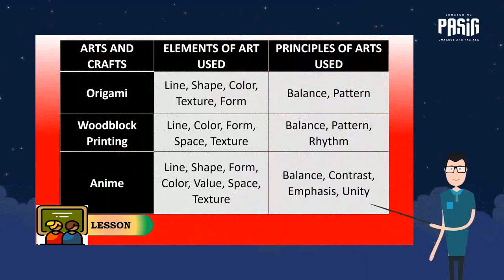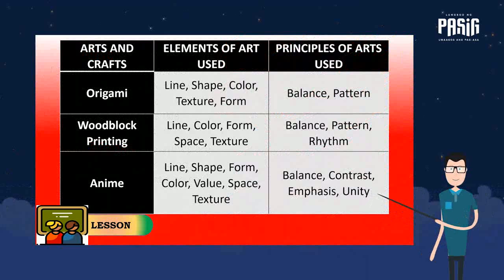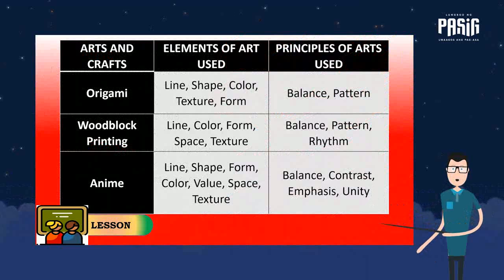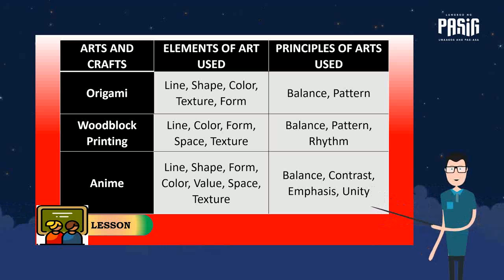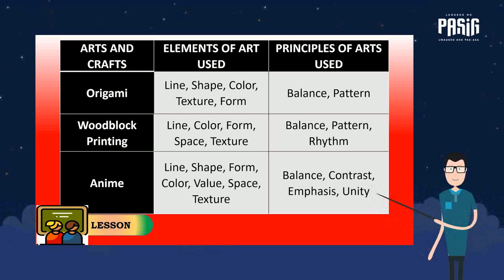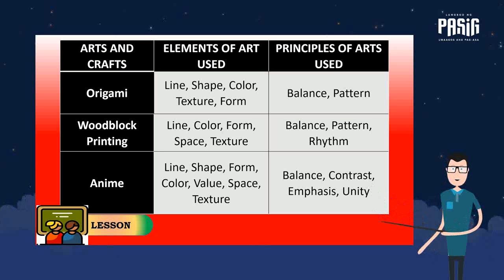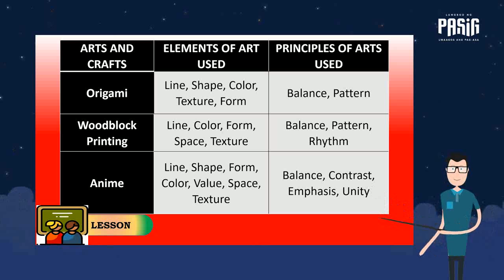The following are the elements and principles of art used in the artworks of Japan. In origami: line, shape, color, texture, balance, and pattern. In woodblock printing: line, color, form, space, texture, balance, pattern, and rhythm. In anime: line, shape, form, color, value, space, texture, balance, contrast, emphasis, and unity.